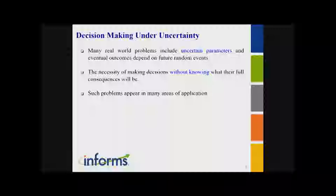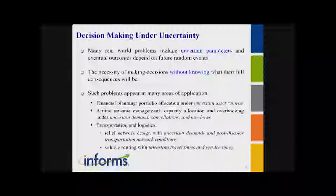Since it's a tutorial talk, I will review some basic concepts which you may already be familiar with. So as we all know, most of the decision-making problems involve uncertain parameters. The problems of optimization under uncertainty are characterized by the need of making decisions without knowing the consequences in advance. We can think about such problems in a wide range of areas — you can think about any optimization problem and develop a version involving uncertain parameters.